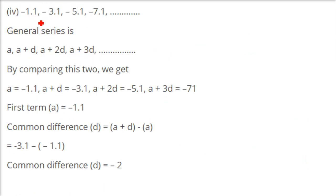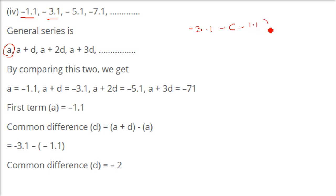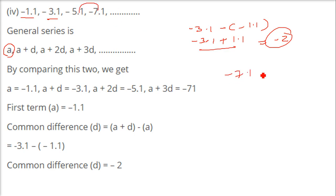Now taking the fourth example with decimal values: the first term A is -1.1. To find the common difference, take the second term -3.1 minus the first term -1.1, which gives -3.1 + 1.1 = -2. Checking another pair: -7.1 minus (-5.1) = -7.1 + 5.1 = -2. So the common difference D is -2.